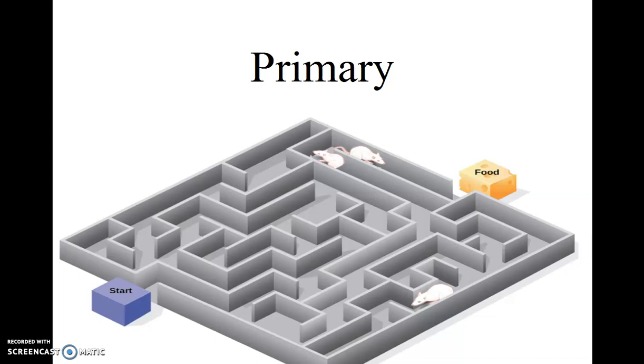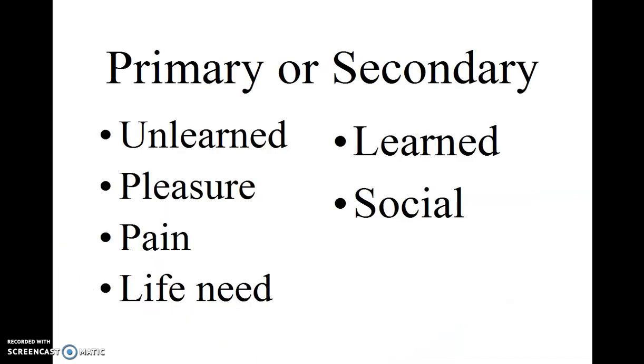Secondary reinforcement usually involves social-based reinforcers, such as approval of others, or the kind of self-esteem that we've learned within a given society.